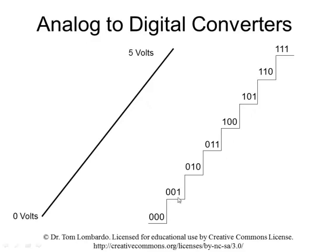A digital value, on the other hand, is a bunch of discrete steps. So we see over here a digital quantity that has eight discrete steps, and so each one would be proportional to one place on this analog signal.